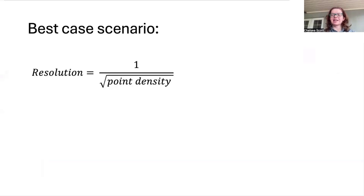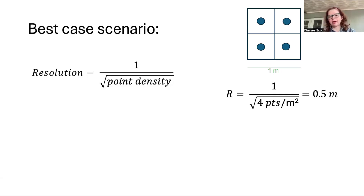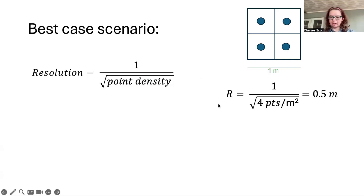I'll begin by discussing the best-case scenario. In this scenario, the resolution is equal to 1 divided by the square root of the point density of the LIDAR data set. So let's look at what this means. Here we have this meter dimension, and in this meter dimension we have four points that are LIDAR returns, shown in blue. In this case, we can make a 0.5 meter or 50 centimeter digital elevation model, calculated by: resolution equals 1 divided by the square root of the point density.